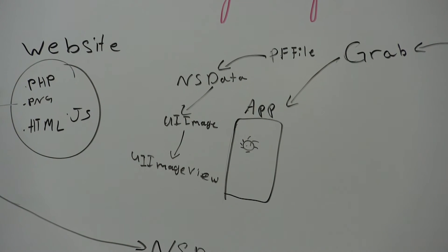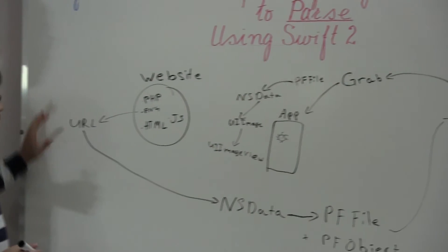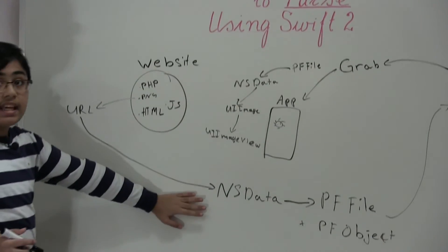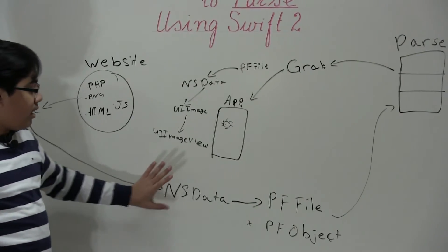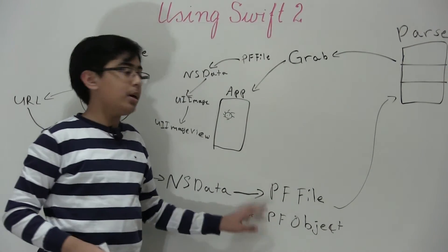And so this is essentially the workflow of our app. We have a website in which we have an image. We take its URL. We take its contents, convert it to an NSData. We take this NSData, put it into a PF file, and then we pair it along with the PF object to name it. And then we put it onto parse.